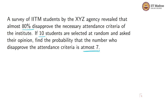How can we relate this problem to binomial distribution? If you pick one student, that student will either approve or disapprove the necessary attendance criteria. So each trial has two outcomes, and the probability that the student will disapprove that criteria is 80%, that means 0.80 is the probability that the student disapproved the necessary attendance criteria.